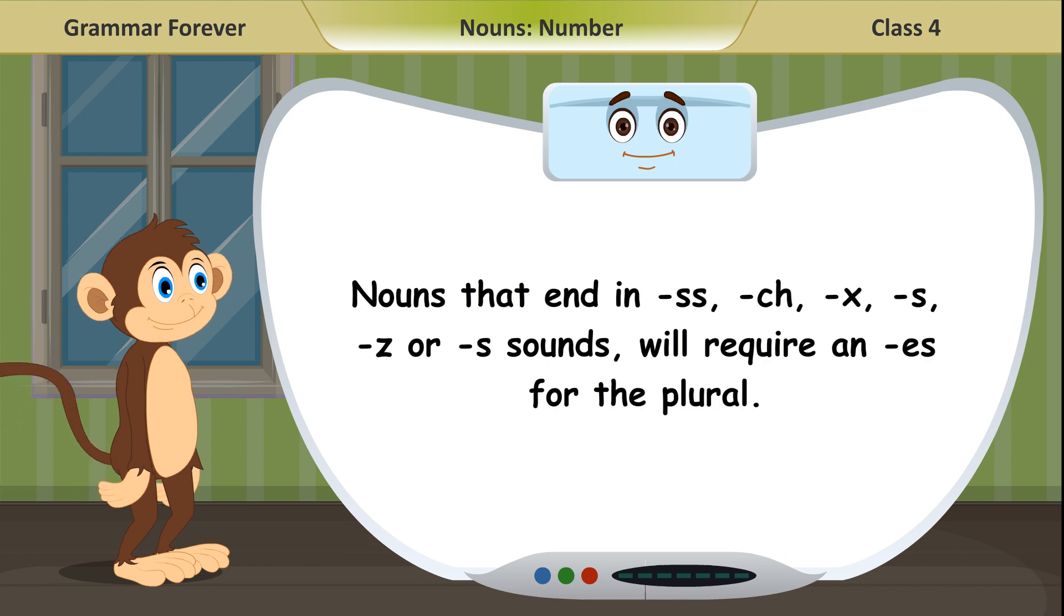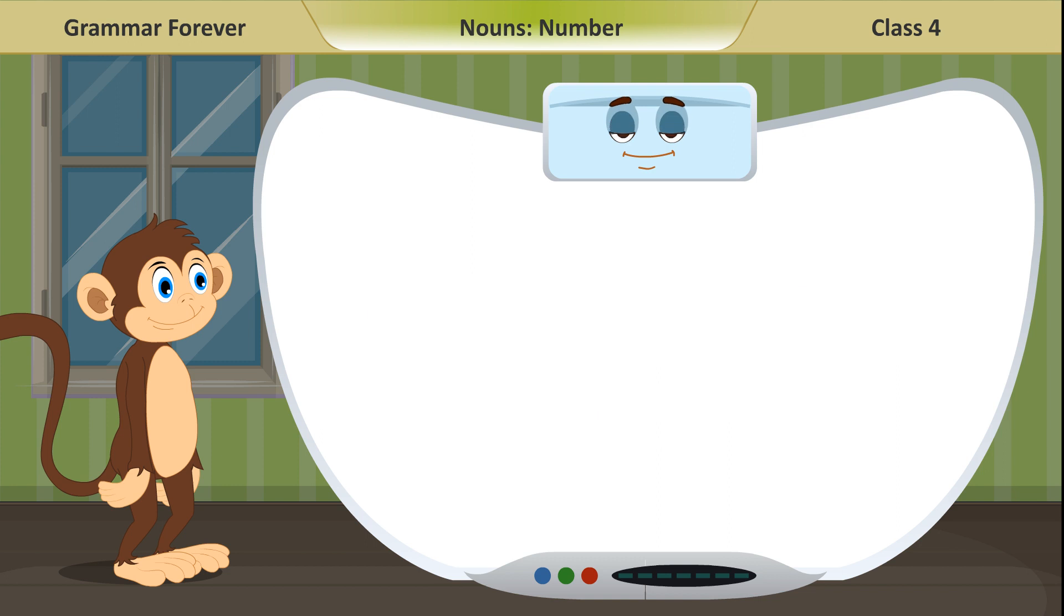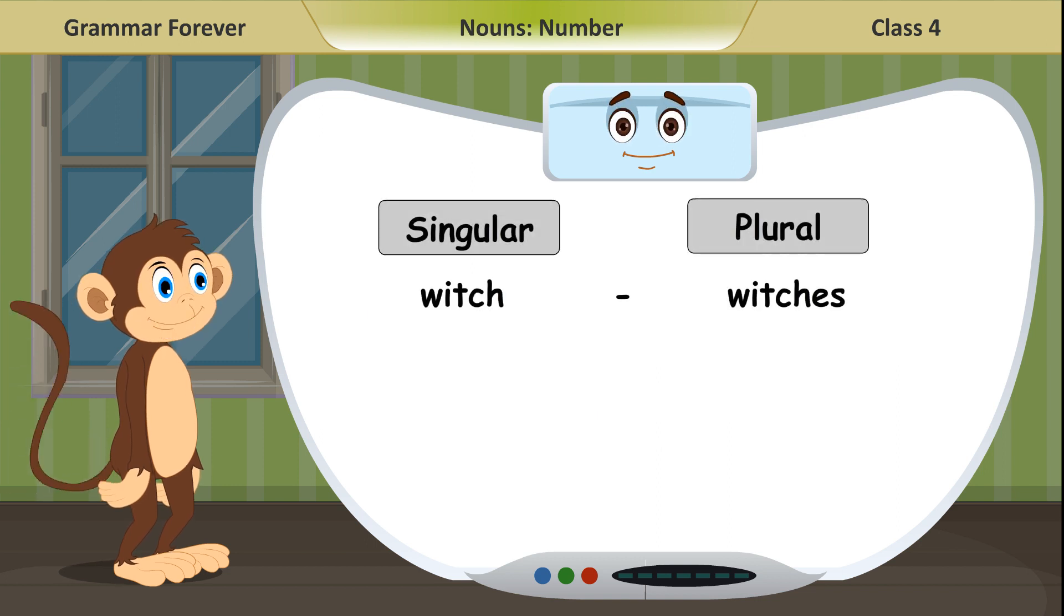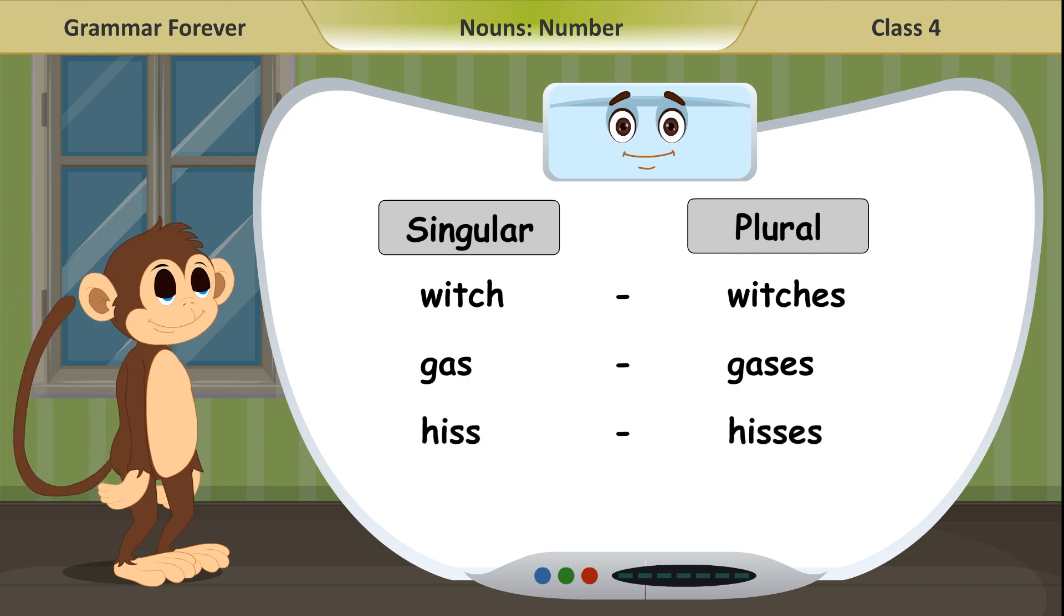Nouns that end in SS, CH, X, S, Z, or S sounds will require an ES for the plural. Singular, plural: Witch, witches. Gas, gases. Hiss, hisses.